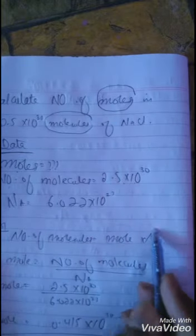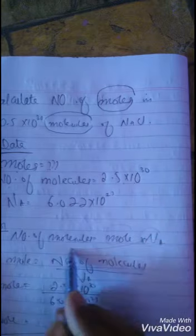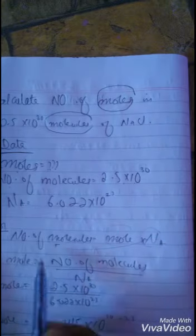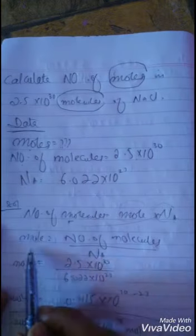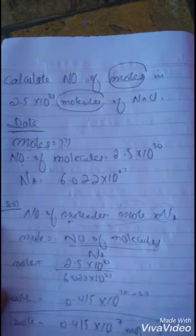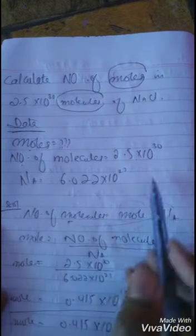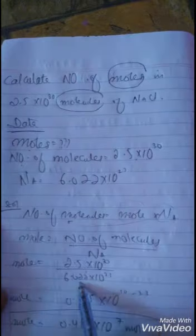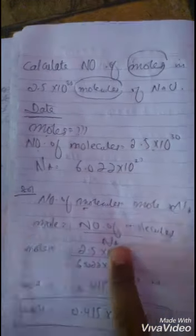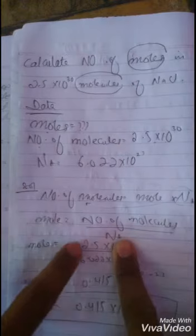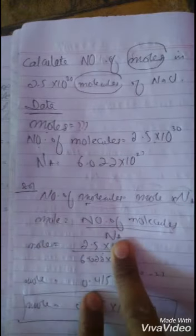We have to calculate moles. This multiplication will be converted into division with number of molecules. Number of molecules divided by Avogadro is equal to moles. Just arrange the formula. Number of molecules is 2.5 × 10^30. Avogadro is constant — do not touch these exponents. Just divide 2.5 by 6.022. The answer is 0.415.